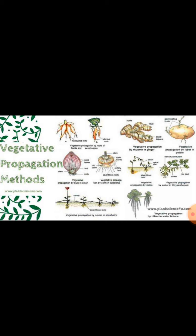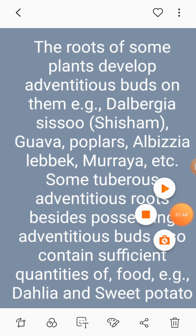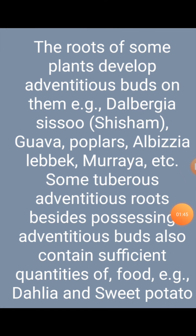The natural method of vegetative reproduction can occur in root, stem, and leaf. Let's discuss one by one. Some roots of a plant develop adventitious buds, and these grow into new plants. This type of reproduction in root has examples such as Dalbergia and Moraya.